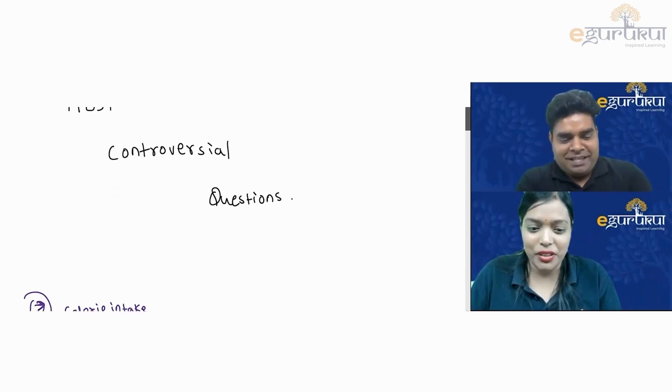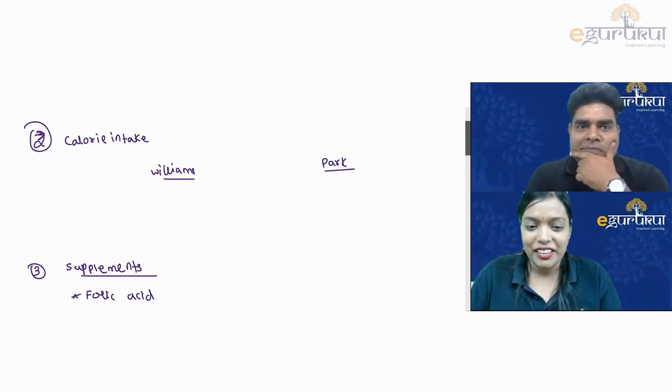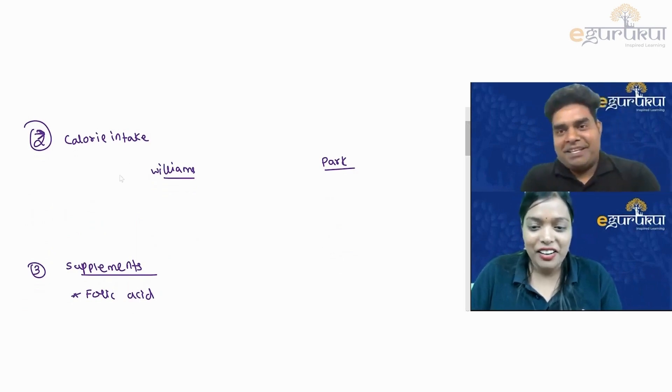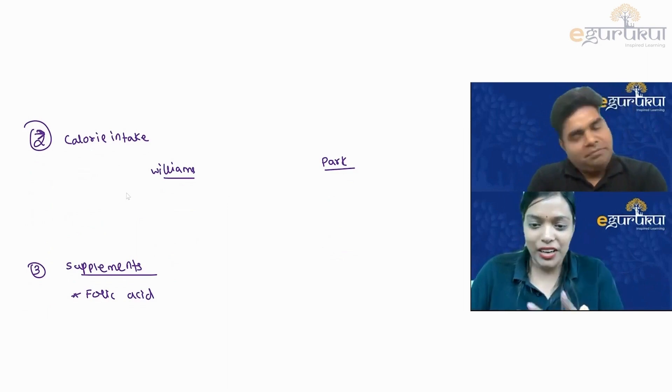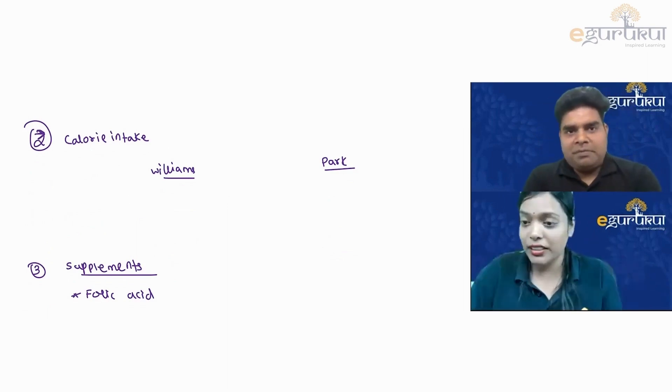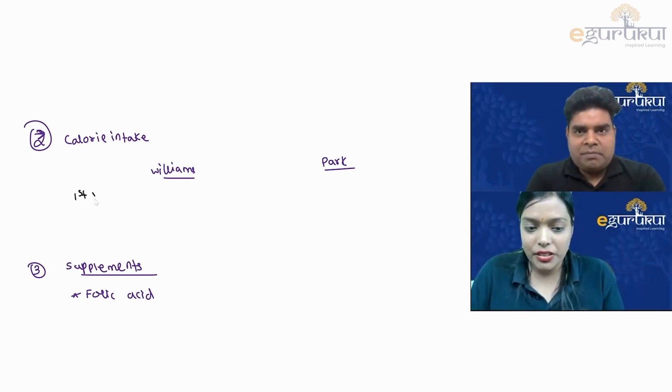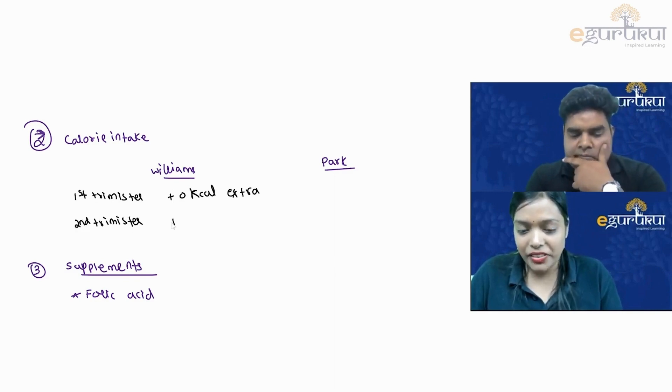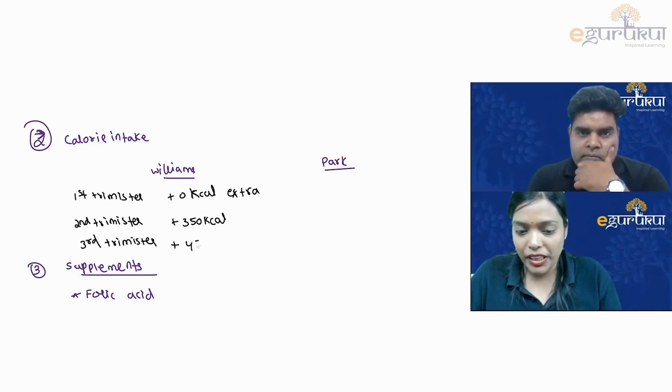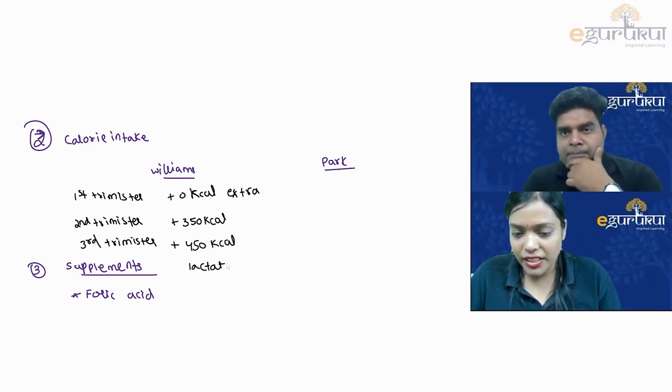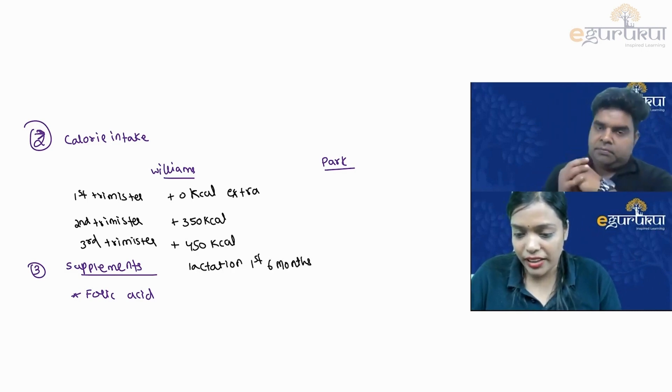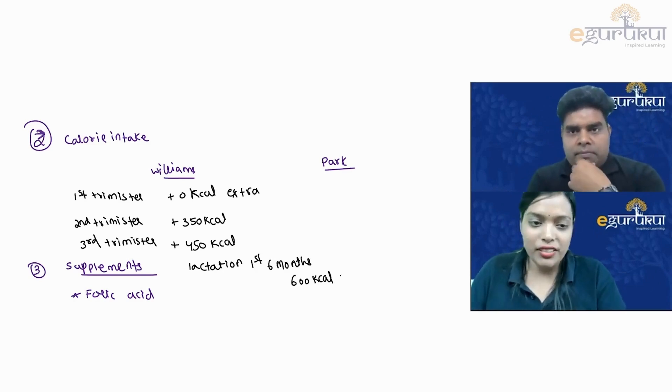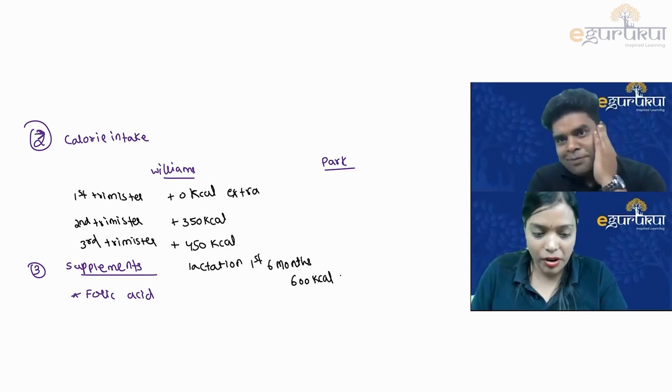The first question to Sir, which has been asked in recent times, is regarding the calorie intake. There is a lot of difference between calorie intake in Williams as well as PARC. According to Williams, in the first trimester you don't require any additional calories extra. In the second trimester it's plus 350 kilocalories, in the third trimester it's plus 450 kilocalories, and lactation for six months is 600 kilocalories. Let's see what Sir has to tell and how we are going to correlate with what is written in PARC.